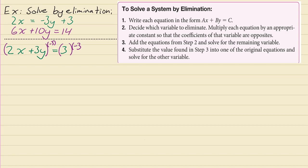Remember that you need to distribute when you do that. So we're going to end up with negative 6x because we're multiplying both of the terms by negative 3. Negative 6x minus 9y equals negative 9, because negative 3 times 3 is actually negative 9. Now I'm just going to copy this original first equation down here so we can add them together.